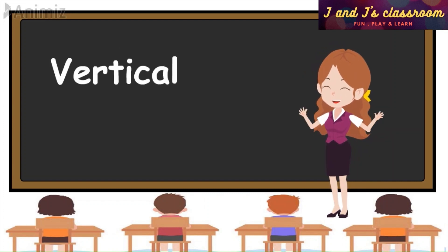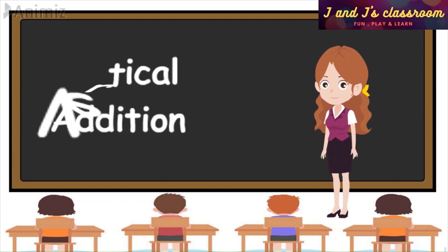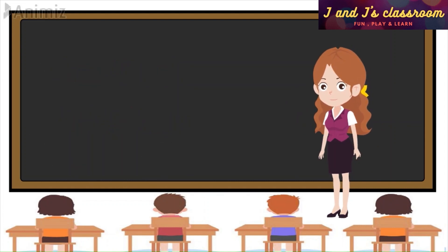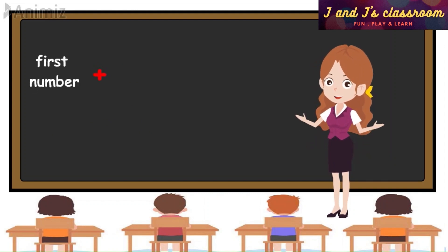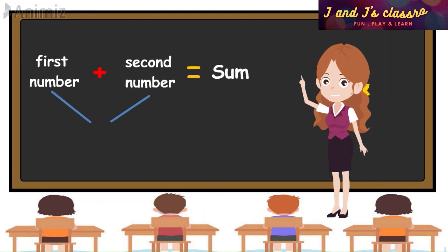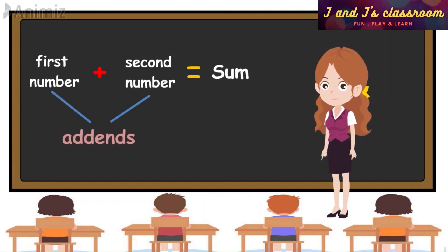Today we are going to learn vertical addition. I hope you know very well about the structure of addition: first number plus second number is equal to sum. First number and second number are called addends, and the sum is the total of first number and second number.